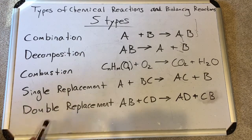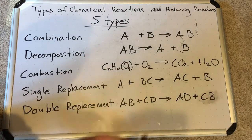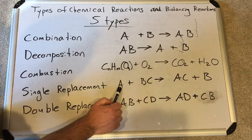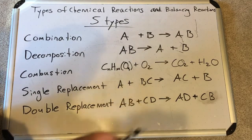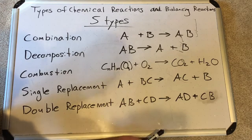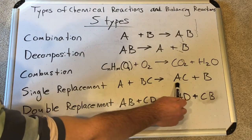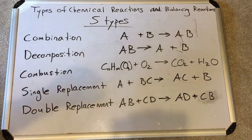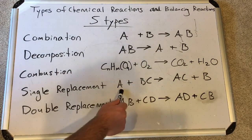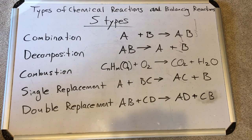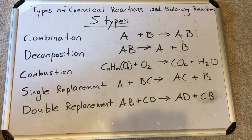Then we move on to single replacement reactions — we're doing some swapping here. A single element swaps with the cation or anion in another compound, but it can only do this if it's more active on a special chart called the activity series. If it is, the reaction will occur and element A will take the place of cation B — like it kicked B out. The result is compound AC plus single element B.